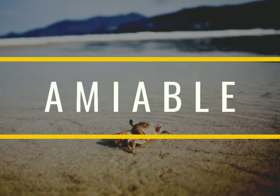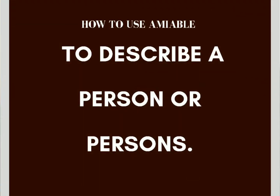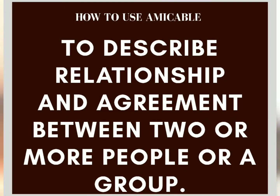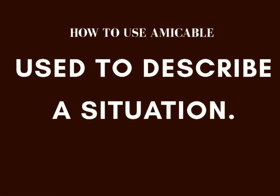In terms of usage, amiable is used to describe a person or persons, while amicable is used to describe interactions, relationships, and agreements between two or more people or a group. Furthermore, amiable describes a person's trait or disposition, while amicable is used to describe a situation.